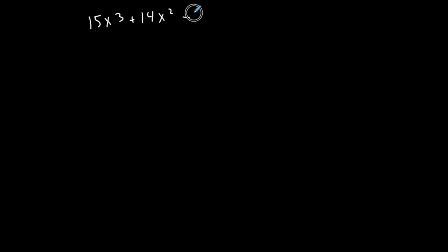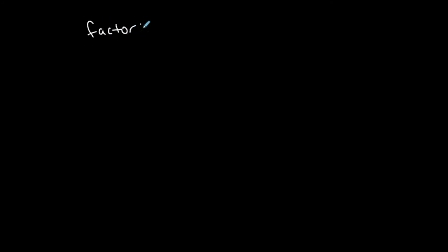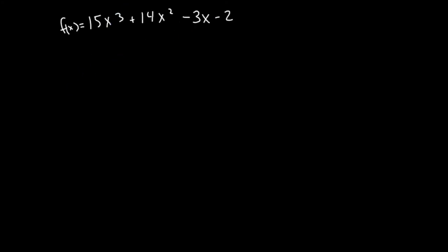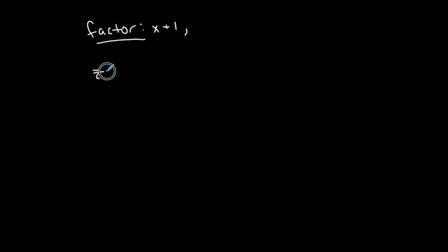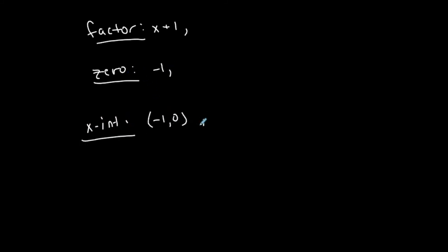Here: 15x to the third plus 14x squared — I believe I'm copying that down right. This is a function, and I want to find all the zeros and all the factors. One factor is going to be given — here's my first factor: x plus 1. How many factors do you expect? Three, because it's a third-degree polynomial. Got one factor, which means I have my first zero, which is negative 1, and my first x-intercept at negative 1, 0. I expect two more.